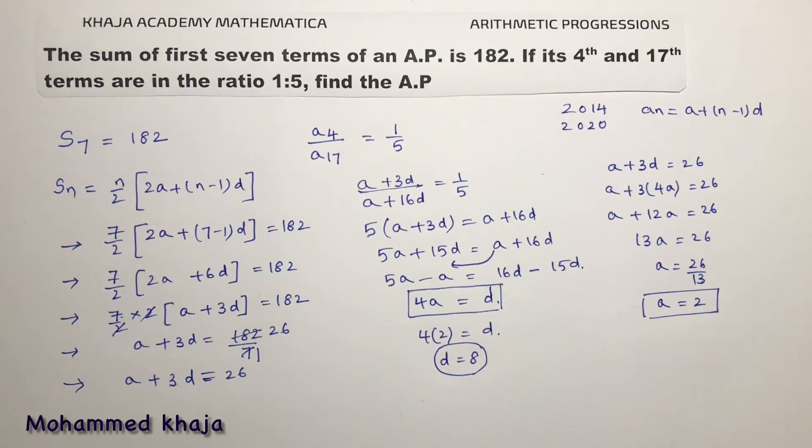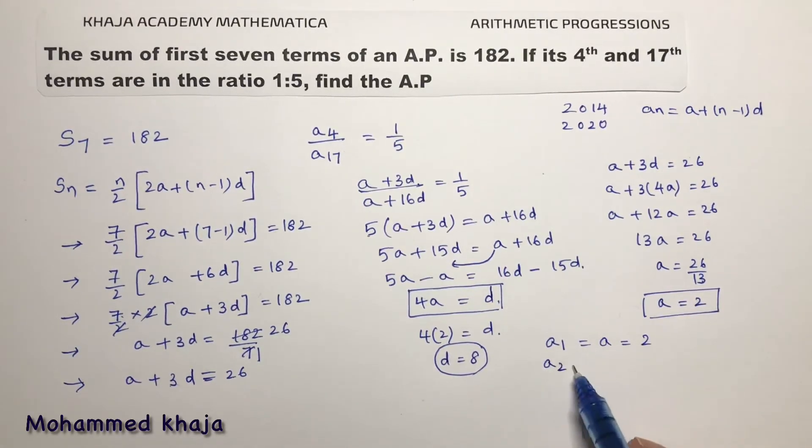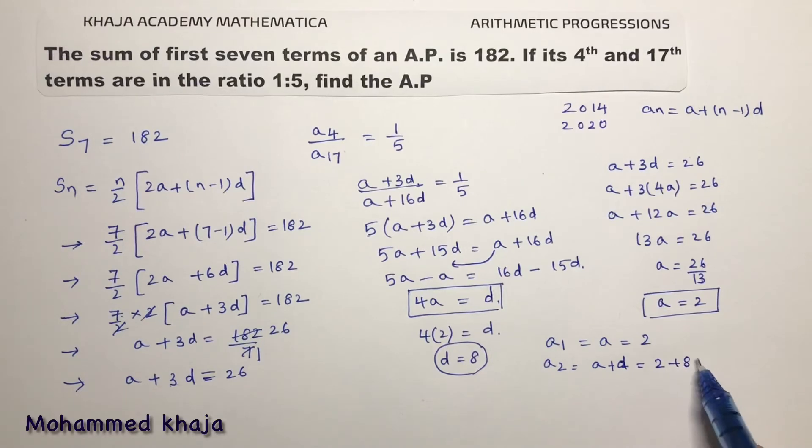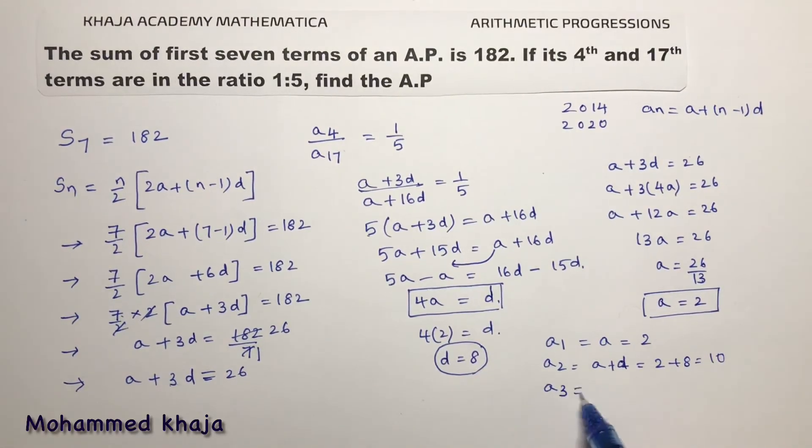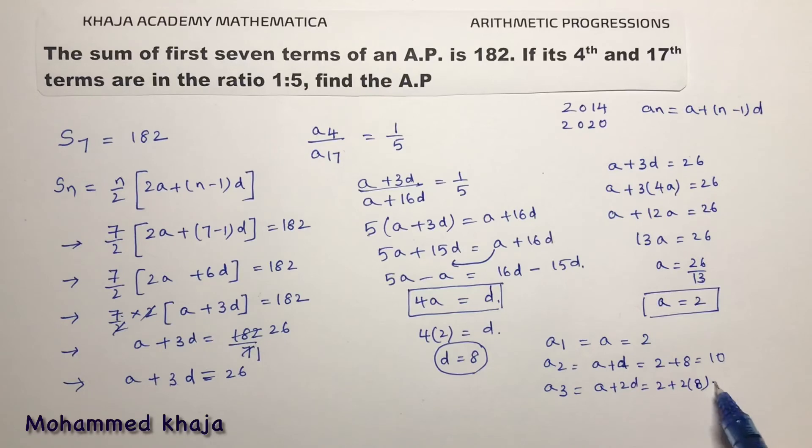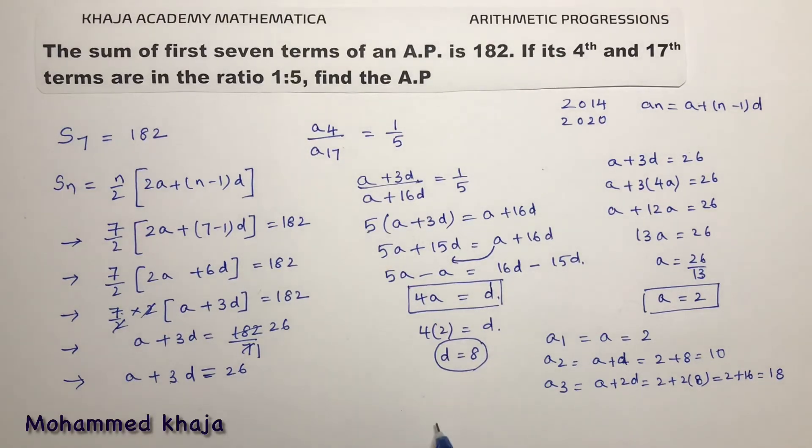Now they are asking for the AP. AP is first term which is A, 2. Second term A plus D, A is 2, D is 8, so it is 10. Third term A plus 2D, 2 plus 2 into 8, 2 plus 16 which is 18. Therefore the AP is 2, 10, 18 and so on. This is the required AP.